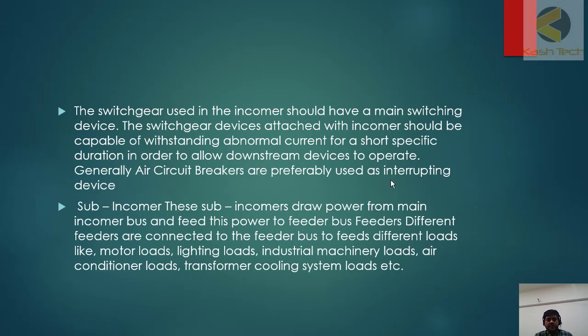The switchgear devices attached with incomer should be capable of withstanding abnormal current for a short specific duration in order to allow downstream devices to operate. Generally, air circuit breakers are preferably used as interrupting device.